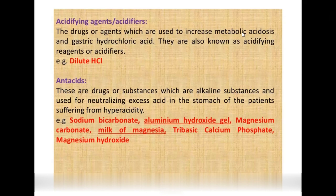Antacids contain alkaline substances that neutralize excessive acid — used for patients suffering from hyperacidity. Examples include sodium bicarbonate, aluminum hydroxide gel, magnesium carbonate, milk of magnesia, tri-basic calcium phosphate, and magnesium hydroxide.